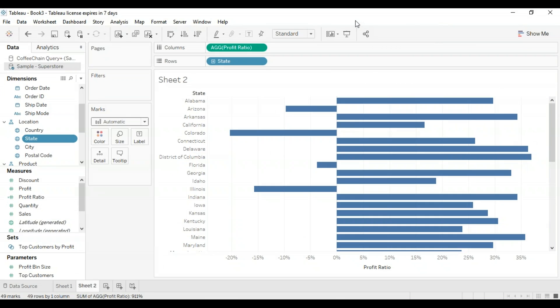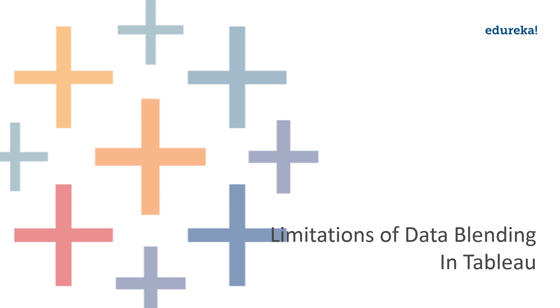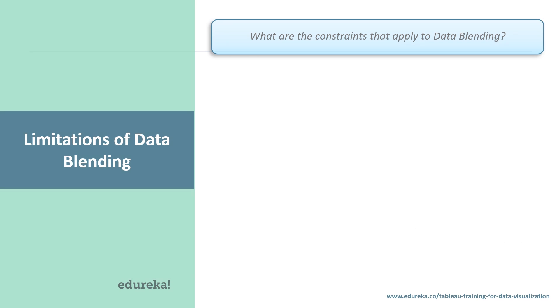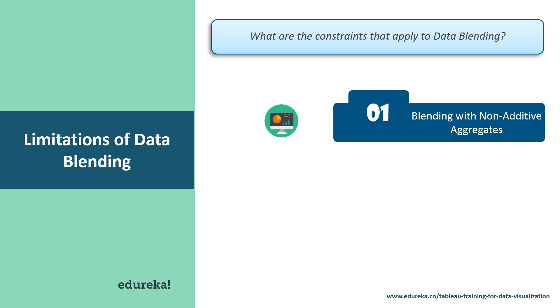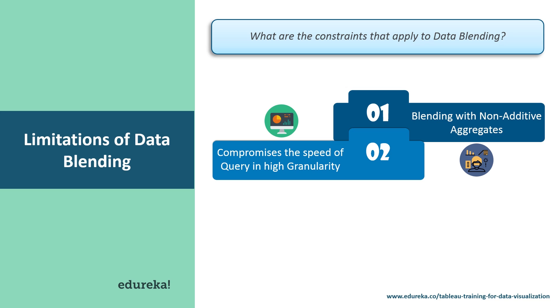Let me go back to my presentation where we can go ahead. Now limitations of data blending. Now what are the constraints that apply to this method? First of all, blending with non-additive aggregates. Now there are some blending limitations around the non-additive aggregates, such as your count D, median, and raw SQL aggregate. When you blend on a field with a high level of granularity, suppose date instead of year, queries can be slowed down. So basically the speed of the query gets compromised.